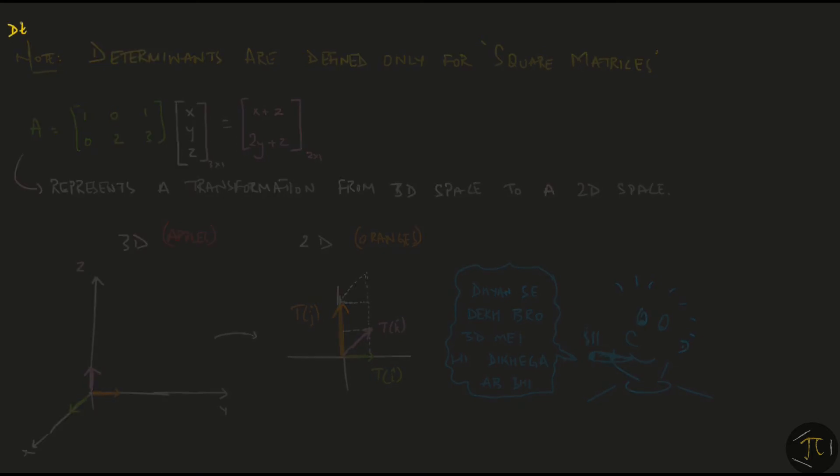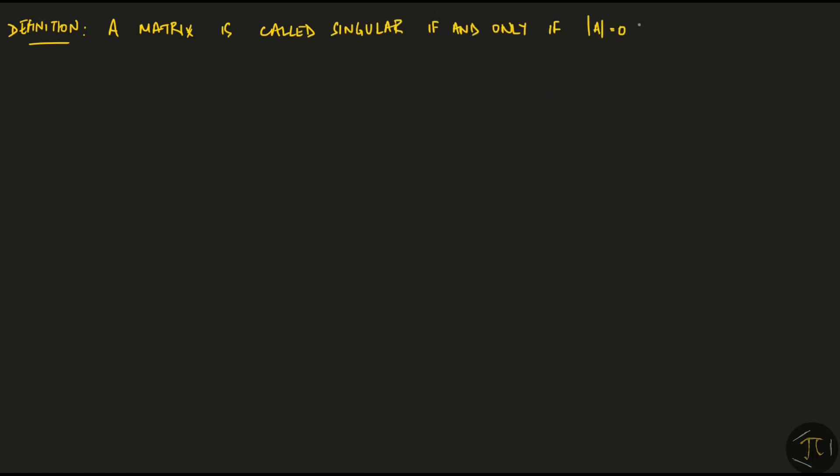Here's another definition. A matrix is called singular if and only if the determinant of the matrix is 0. This terminology is only for square matrices. Determinant of A equal to 0 implies that the inverse matrix does not exist.